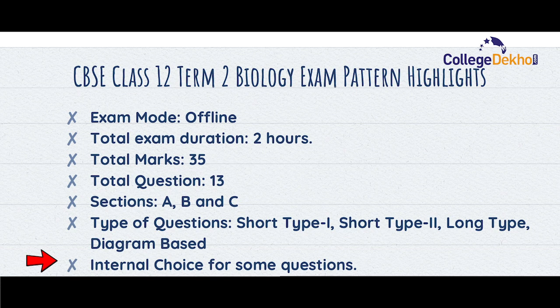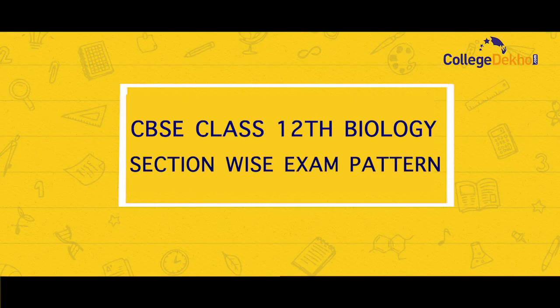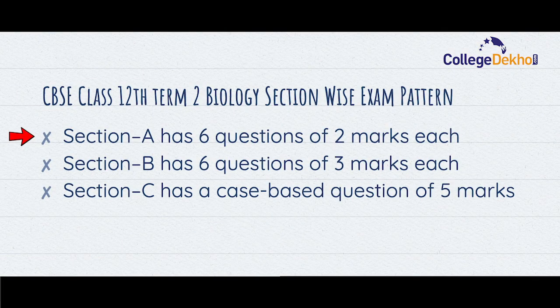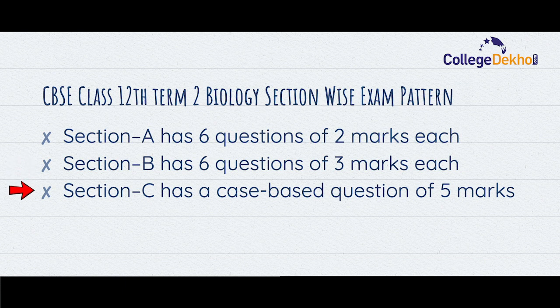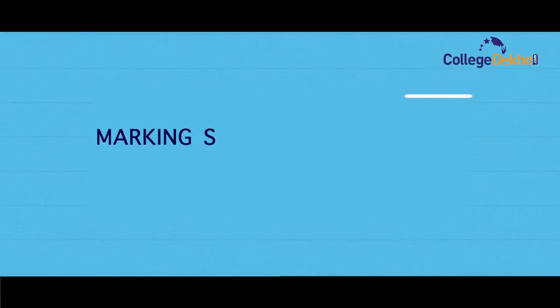Now let us look at the section-wise exam pattern for the CBSE Class 12th Biology exam. Section A will have a total of six questions, with two marks each. Section B will have a total of six questions, with three marks each. Section C will be for case-based questions, which will carry five marks.